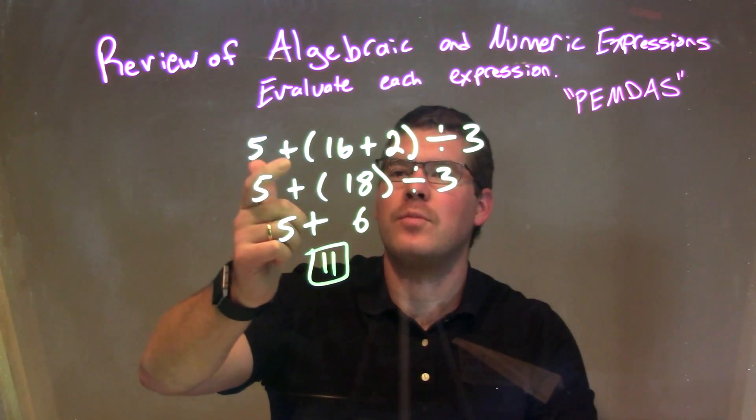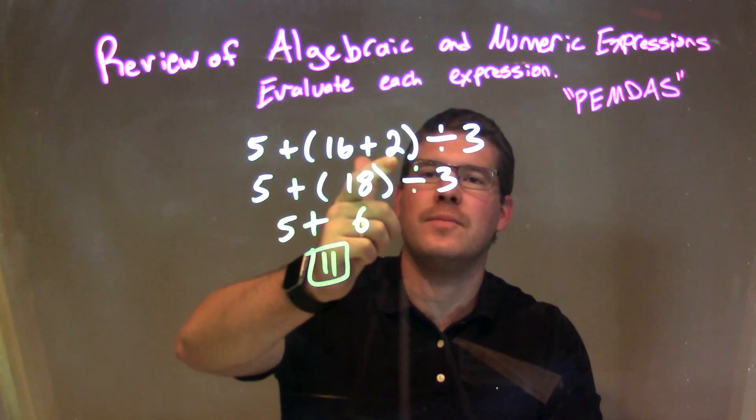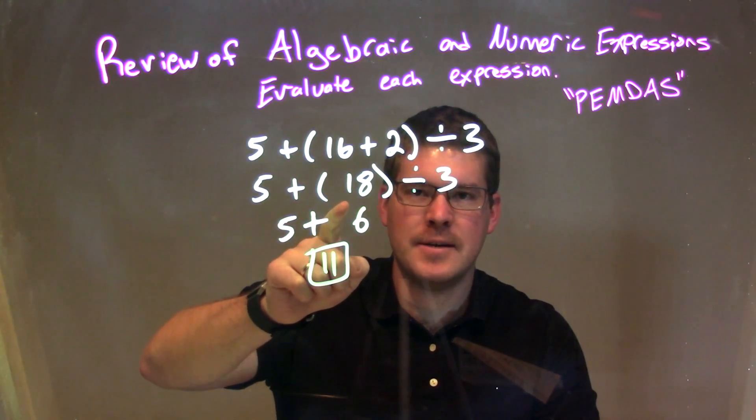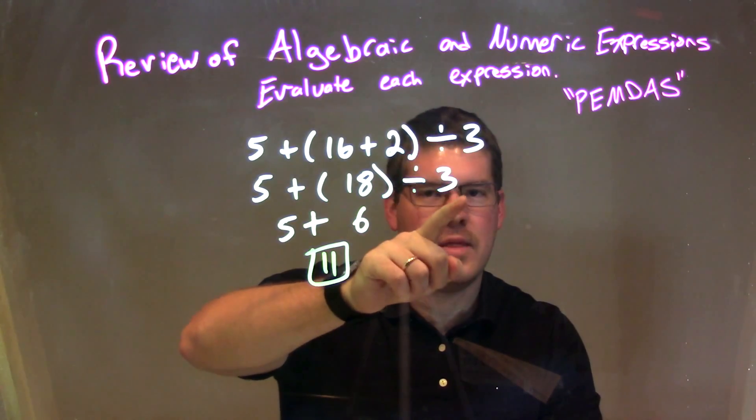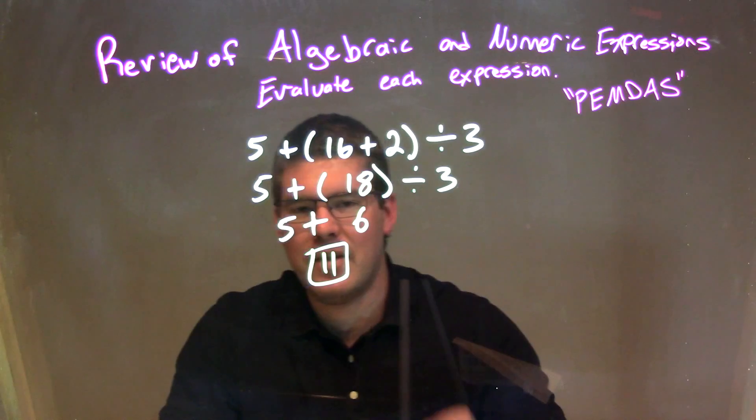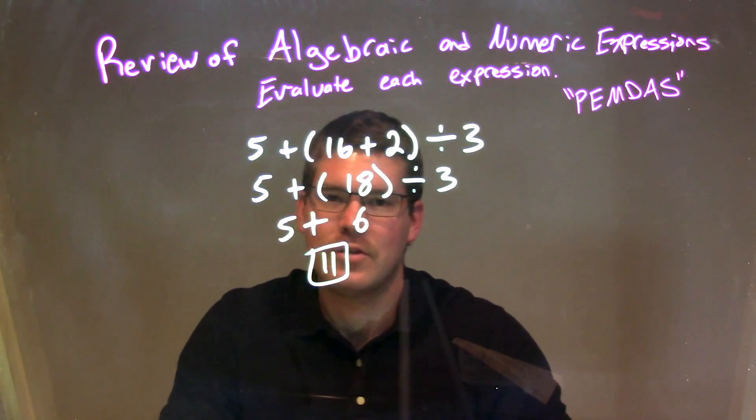So let's recap. We're given 5 plus, in parentheses, 16 plus 2, end parentheses, divided by 3. We dealt with the parentheses first, which gave us 18. Then we had to divide by 3. That was our next step, which gave us 6. And then 5 plus 6 is 11. 11 is our final answer.